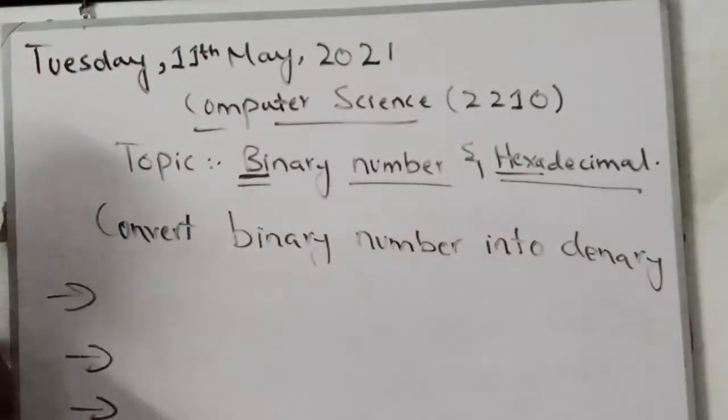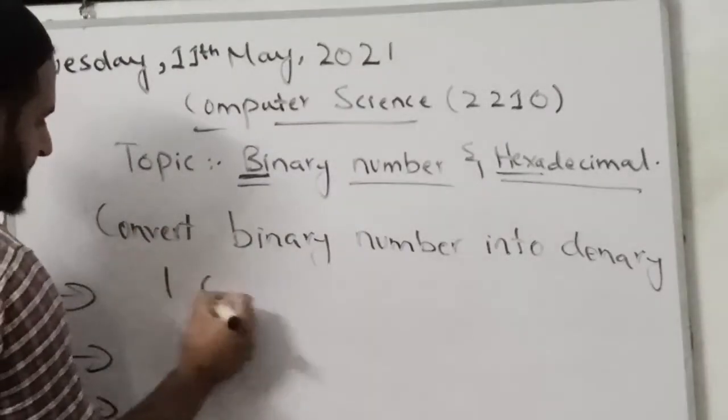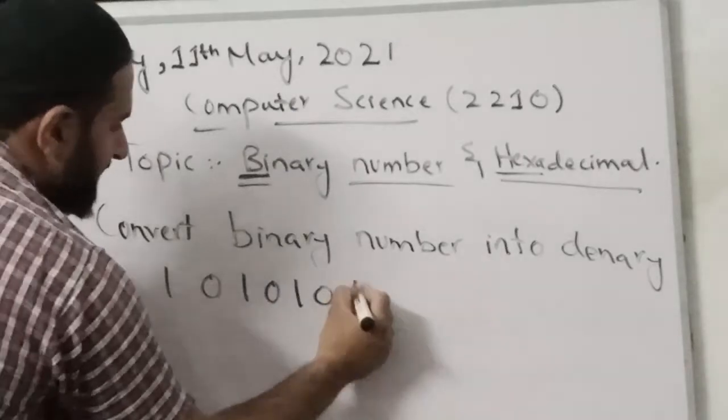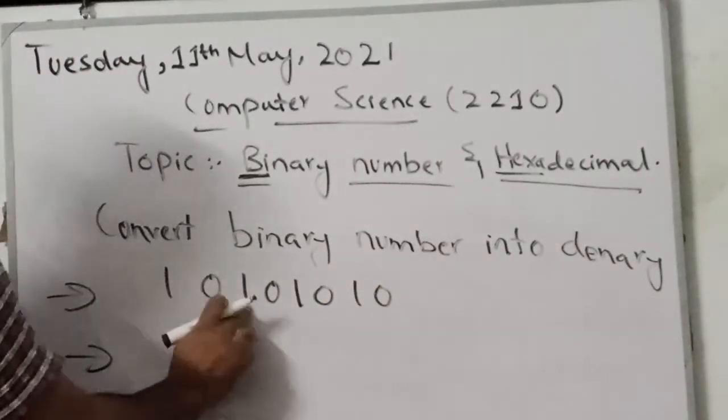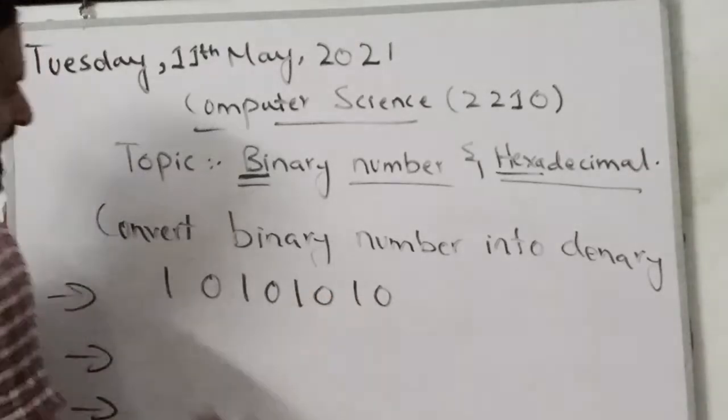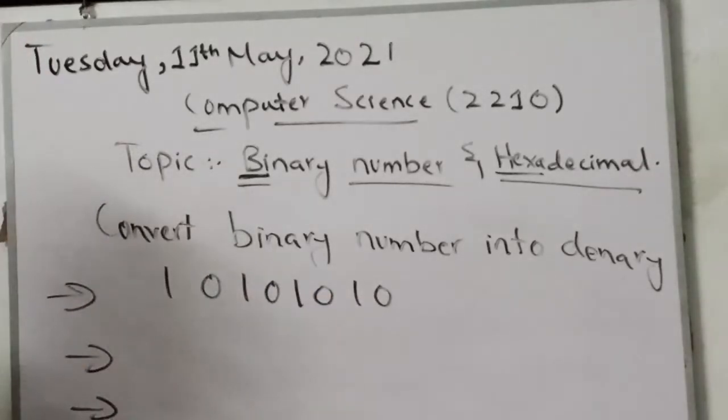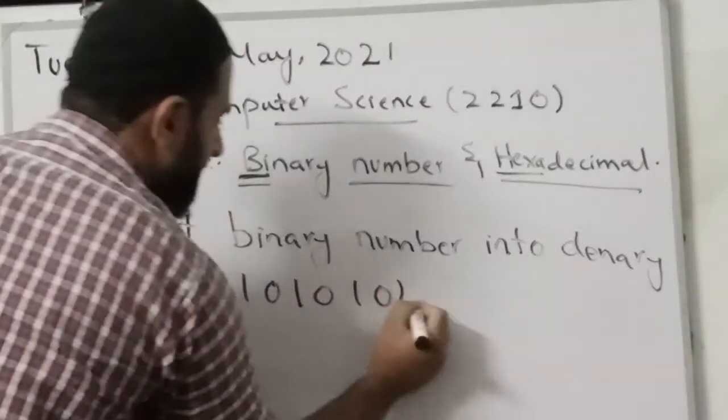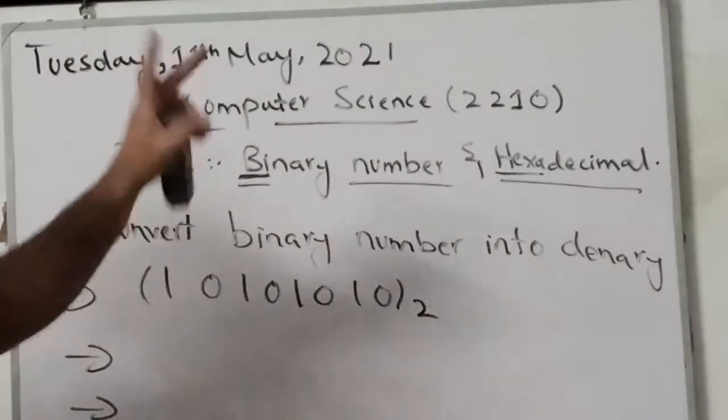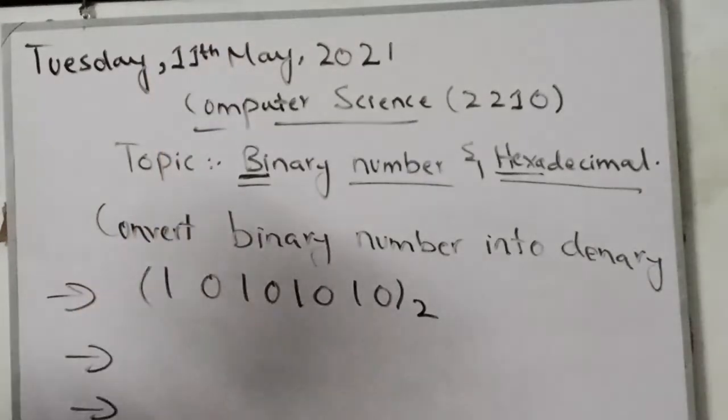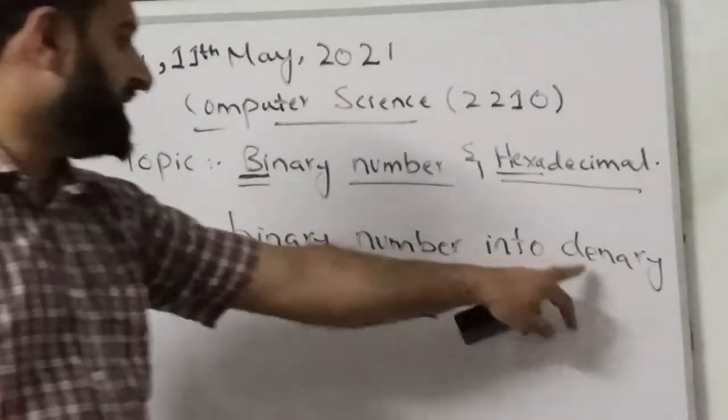I'm going to pick one byte of information, and that is 10101010. So here is our one byte of information, base 2. It's base 2 because we are using only two values: 0s or 1.